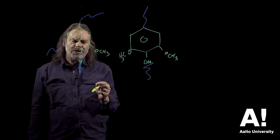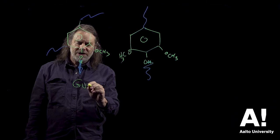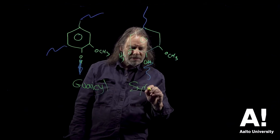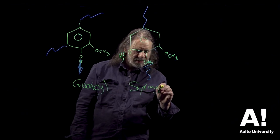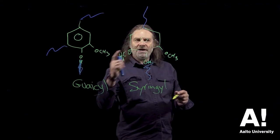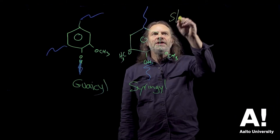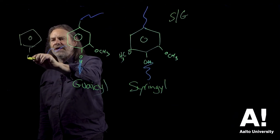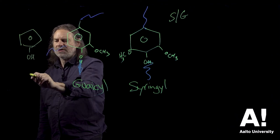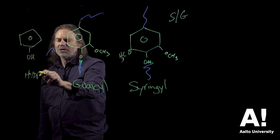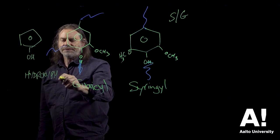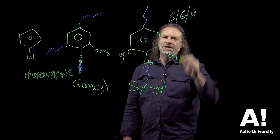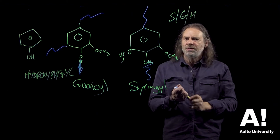The ratio of these units is known as the syringyl-guaiacyl ratio. So we're always measuring in lignin — the SG ratio is something that's very important. The other one is called hydroxyphenyl, where we don't have the substitution. So the SGH ratio is an important property of the lignin because it determines the cross-link density.